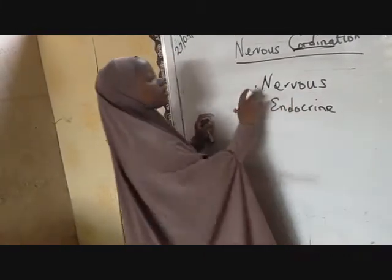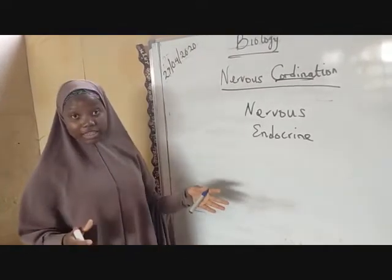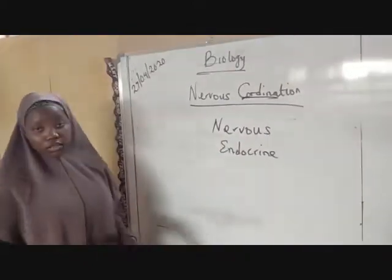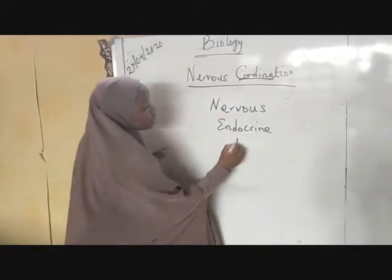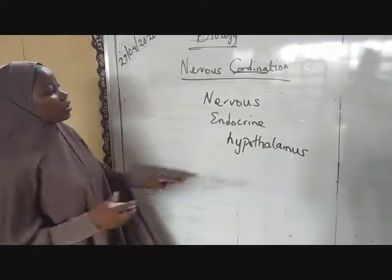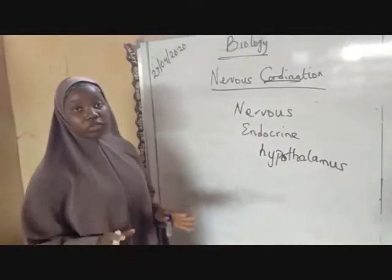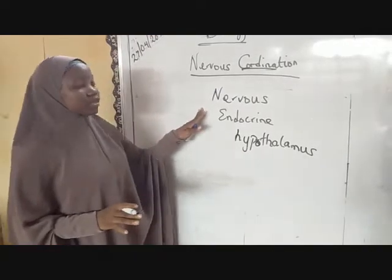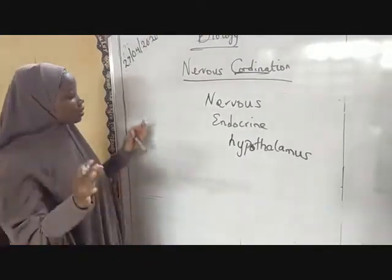The nervous system and the endocrine system both assist the body in coordinating its activities. The endocrine system, as we mentioned, is a system of ductless glands which produces different hormones for various activities in the body. The link between the nervous system and the endocrine system is the hypothalamus — the hypothalamus in the brain, which performs a very important role in coordinating our whole body system.